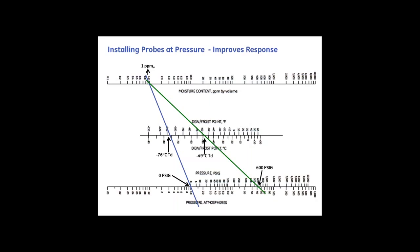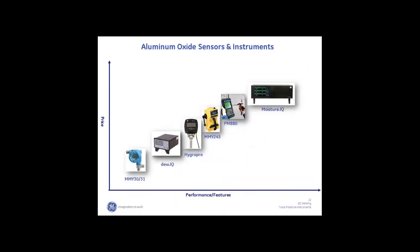Within our technology we have a number of transmitters and indicators. We map them out in a value map — price versus performance and features. In the southeast of that map are basic transmitters in an enclosure providing a linear 4 to 20 milliamp signal and display. As we move to the northeast, we add more features: data logging, alarm relays, the ability to measure in organic liquids, portability, and multi-channel capability. Our Moisture IQ analyzer can measure up to six sensors simultaneously, giving you a multi-parameter and multi-channel analyzer.